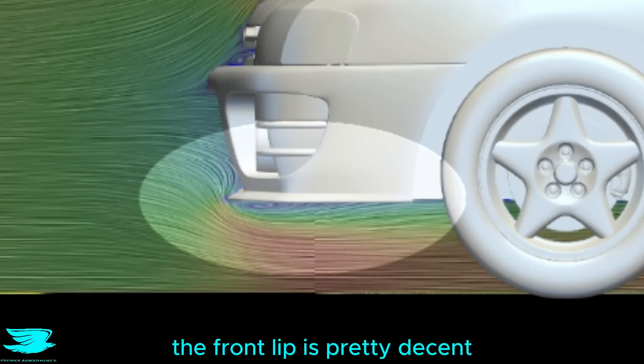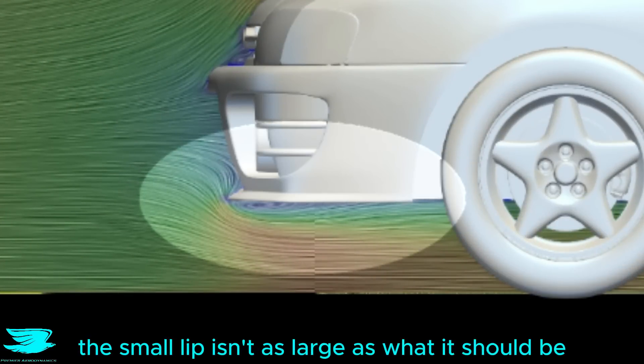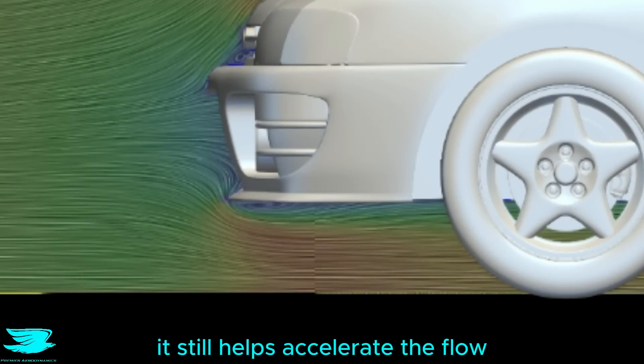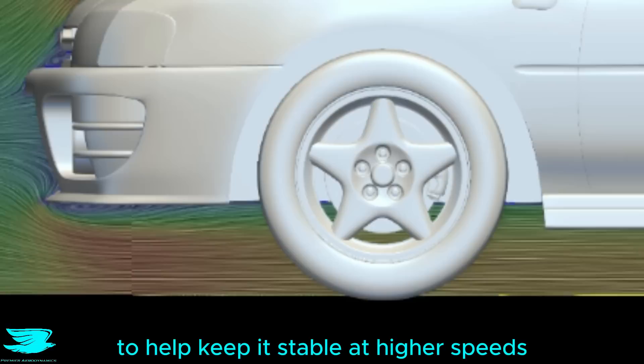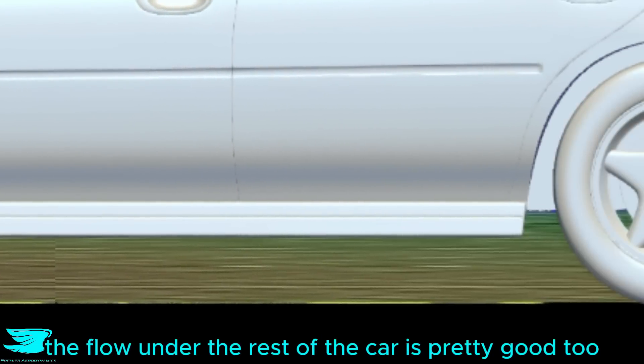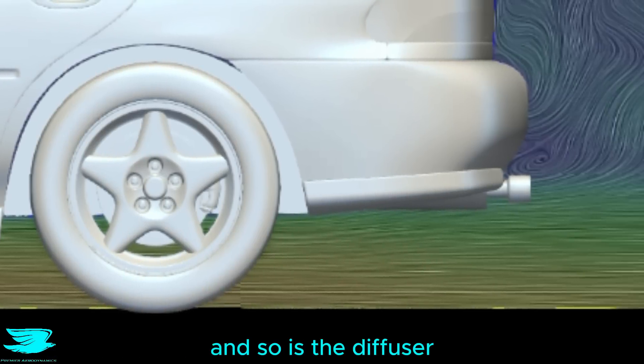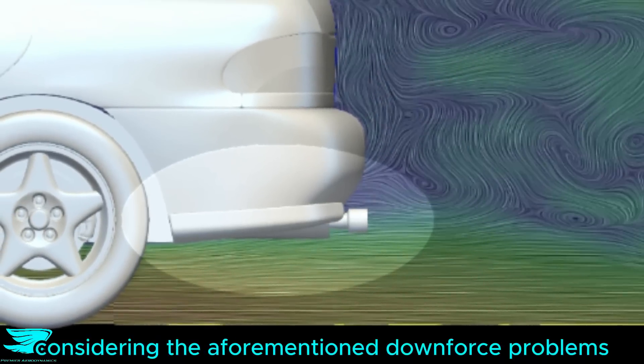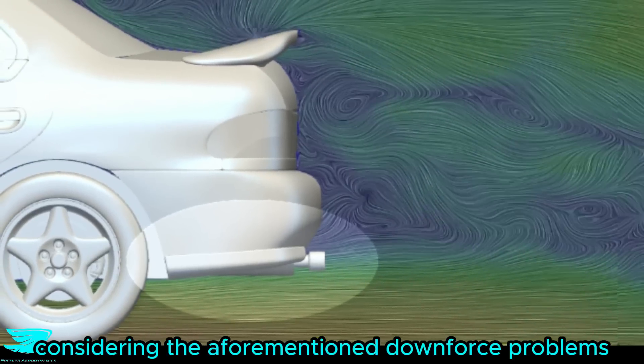The front lip is pretty decent, because while the small lip isn't as large as what it should be, it still helps accelerate the flow under the front of the car to help keep it stable at higher speeds. The flow under the rest of the car is pretty good too, and so is the diffuser, which is a little surprising considering the aforementioned downforce problems this car had.